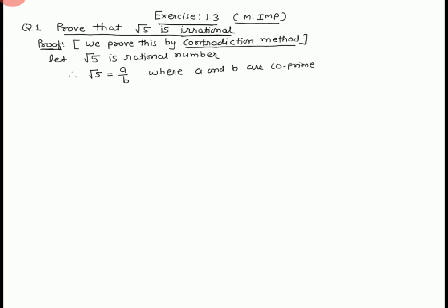What is the meaning of co-prime number? For this reason, we can say that a and b are co-prime numbers, where HCF equals 1. Now, we take cross-multiply. A equals square root of 5 times b.